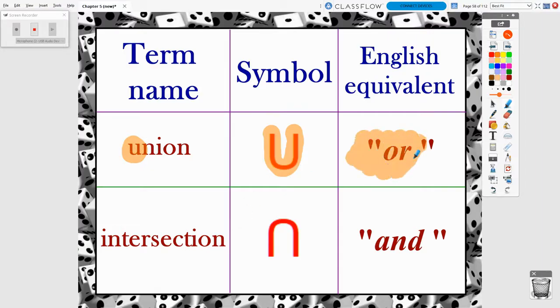Instead of seeing the word AND, you're going to see an upside down U. Whenever you see the upside down U, we read that as intersection. But really, the English equivalent is the word AND.